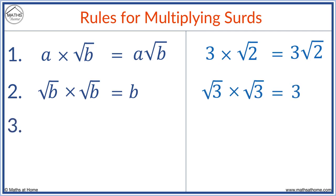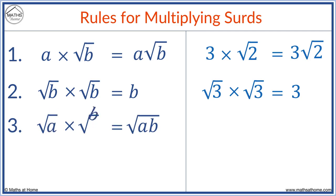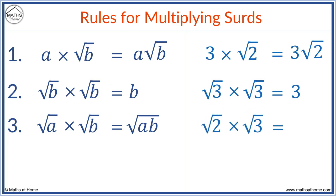Rule 3: root a times root b equals root ab. Simply multiply a and b. For example, root 2 times root 3 — we have numbers under a square root which we multiply: 2 times 3 equals 6, giving root 6.